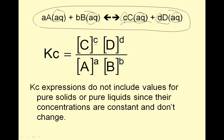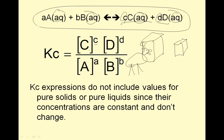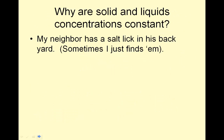Kc expressions do not include values for solids or liquids, since their concentrations are constant and don't change. Imagine a big salt lick — if a deer laps up the salt when the lick is large, and another deer comes when it's smaller, will it be saltier or less salty? It'll be the same saltiness. Solids have the same concentration all the time. Similarly, pure water: can I make it waterier or less watery? No. So solids and liquids are excluded.